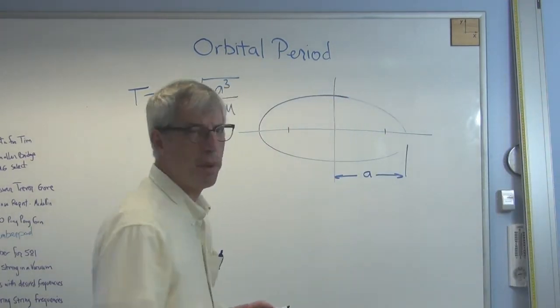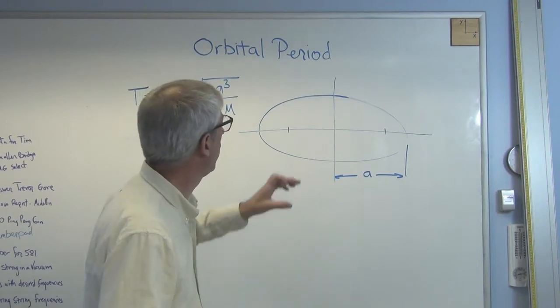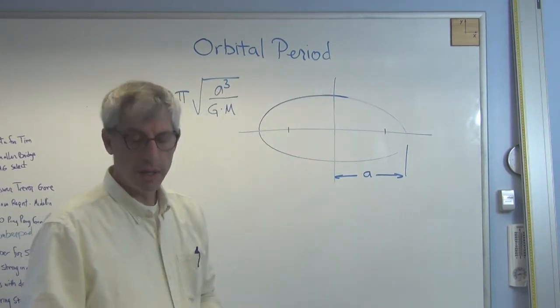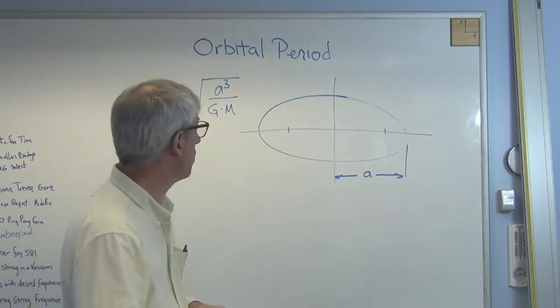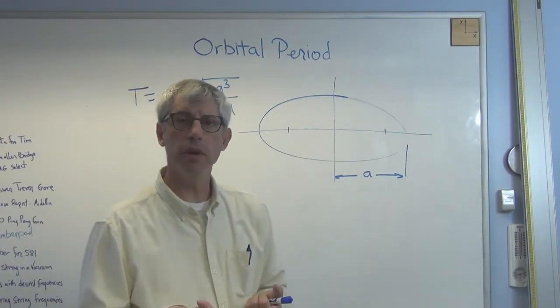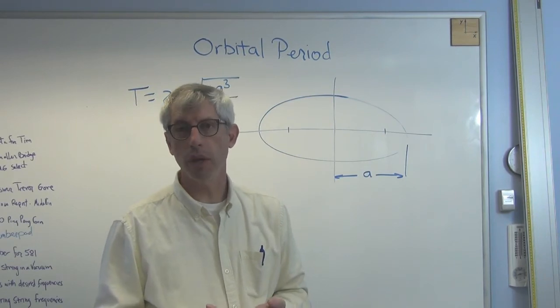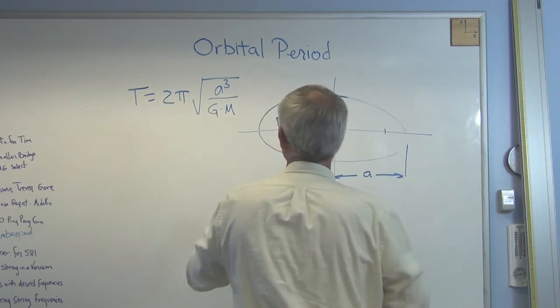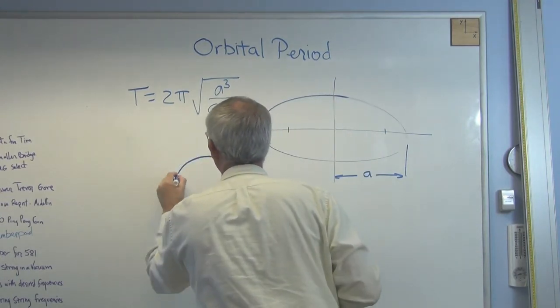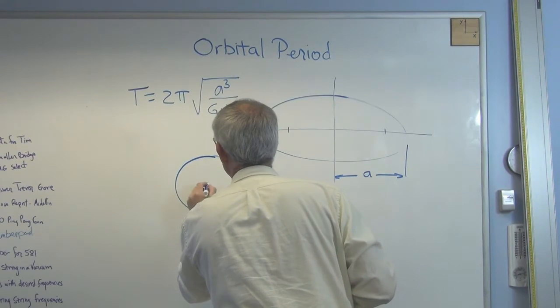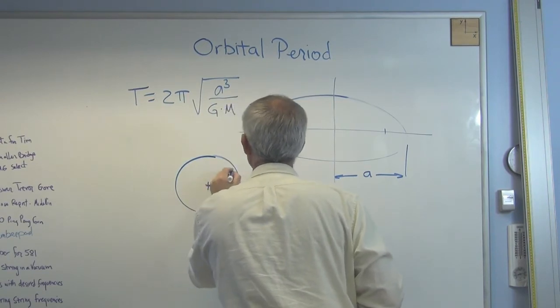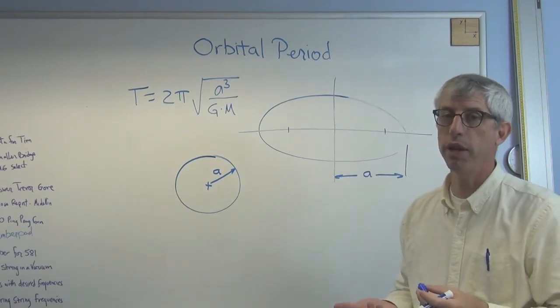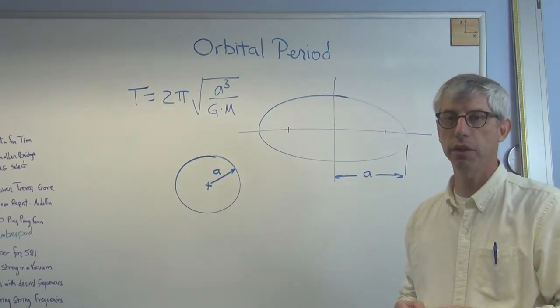Let me get out of your way here. I have a very small office, so I'm moving around a lot. There is the semi-minor axis. Now, we don't use the semi-minor axis a lot, so I'm not going to label it here. What if you're in a circular orbit? Well, in a circular orbit, these two foci are in the same place.